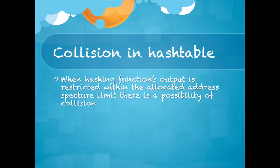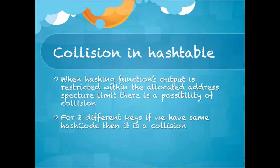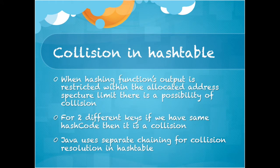What does collision in hash table mean? When the hashing function's output is restricted within the allocated address spectra limit, there is a possibility of a collision. For example, it can so happen that two different keys might return the same hash code — then it is said to be a collision. Java uses separate chaining for collision resolution in hash table.